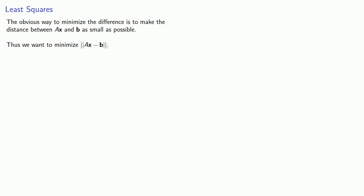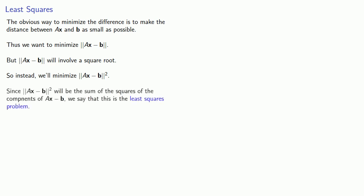But remember, when we calculate a norm this way, this will involve a square root, which is a little bit messy. So instead, we'll minimize the square of the norm ||Ax - b||^2. And since ||Ax - b||^2 will be the sum of the squares of the components of Ax - b, we say that this is the least squares problem.